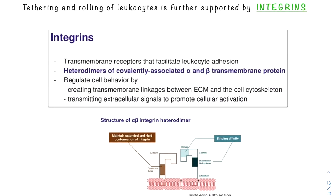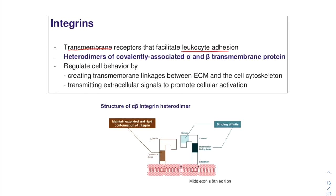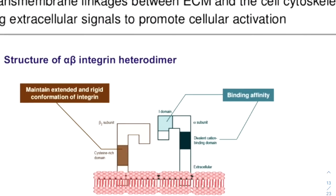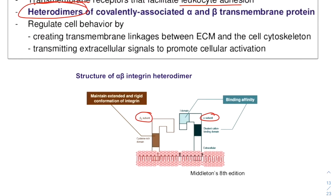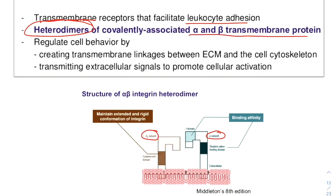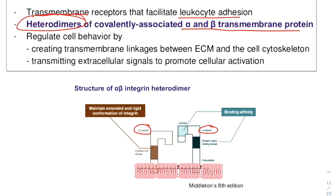Integrins are transmembrane receptors that facilitate cell-to-extracellular matrix adhesion. Integrins are heterodimers in their configuration, meaning they have two subunits: one alpha subunit and one beta subunit — two covalently associated alpha and beta proteins.